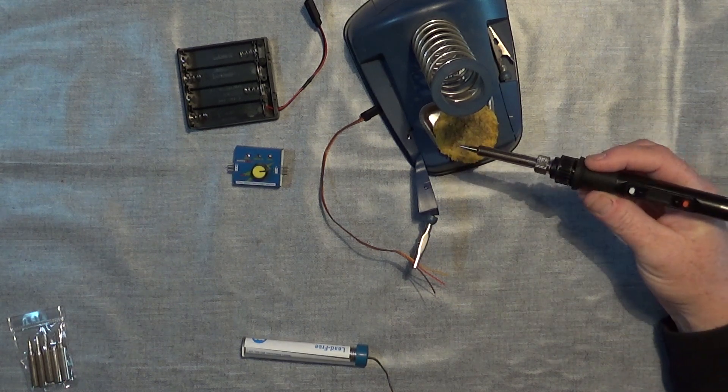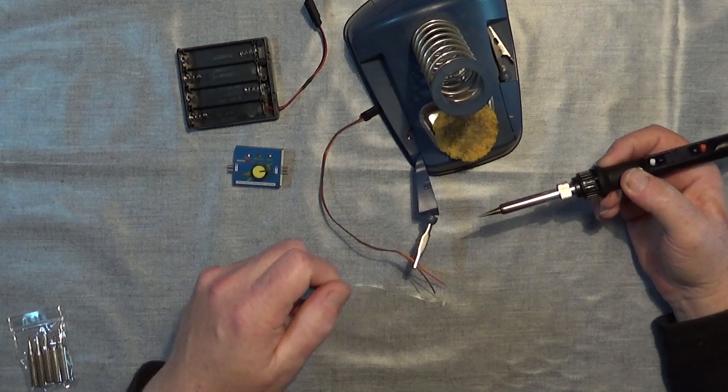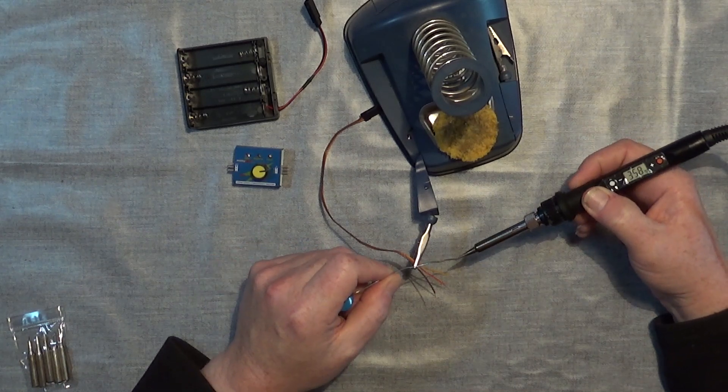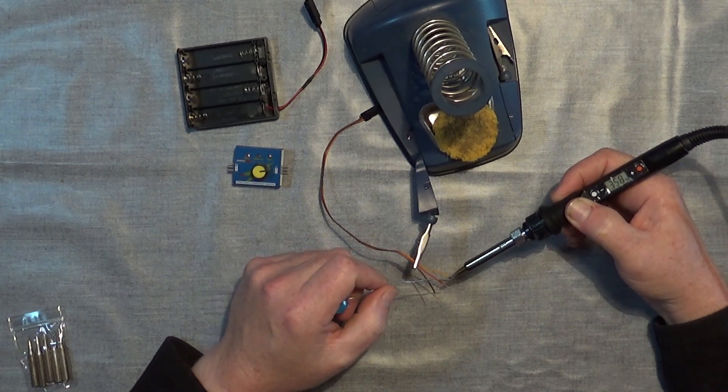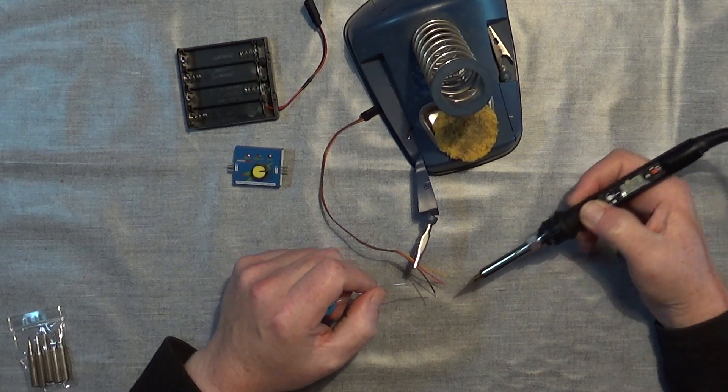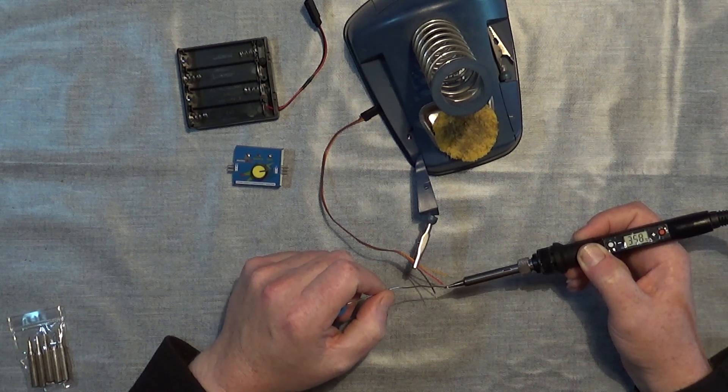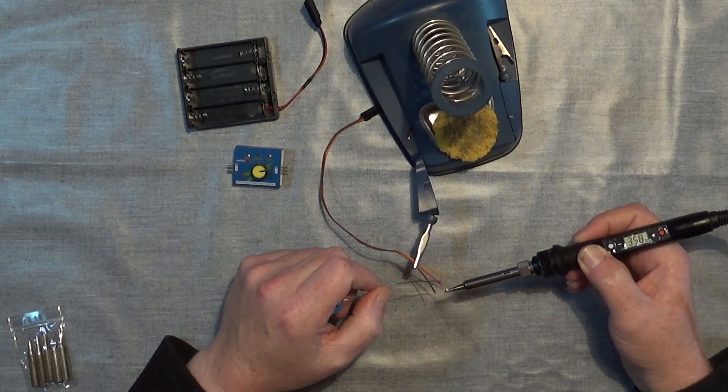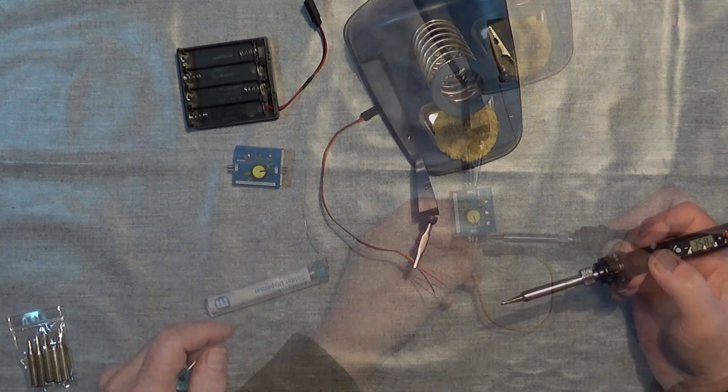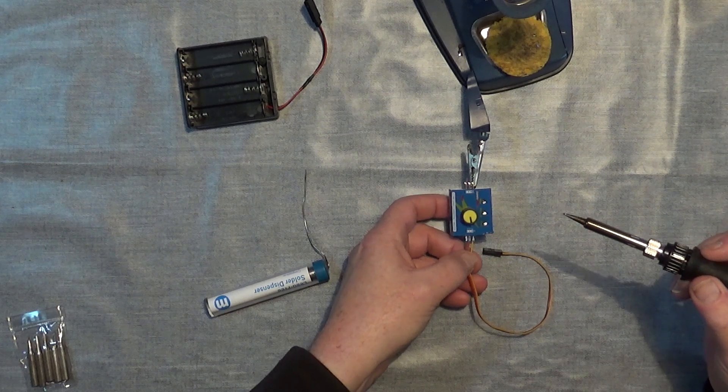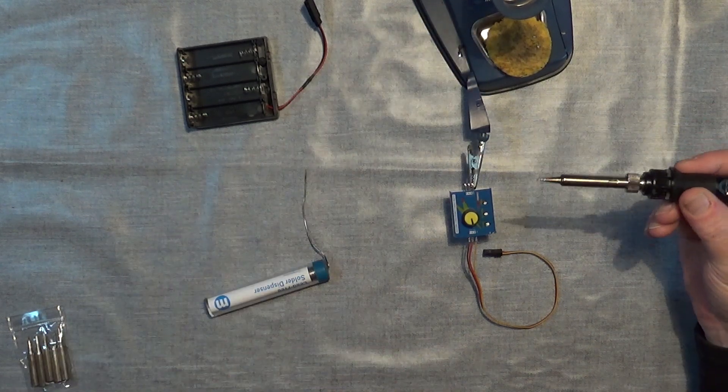So we'll just give this new soldering iron a test. I'm just going to tin these leads first. Put a dab of solder on, hold it on, and dab it on. Like so. And there we go.